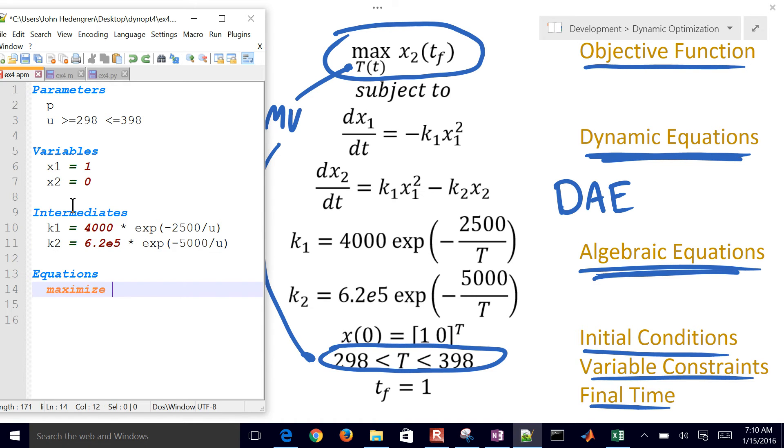Now I have my equations. I want to maximize X2, but I don't just want to maximize X2 throughout the whole time horizon, I just want to do it at the very end, and so that's where the parameter P is going to come in. It's going to be 0 everywhere except for at the very last point where it will equal 1.